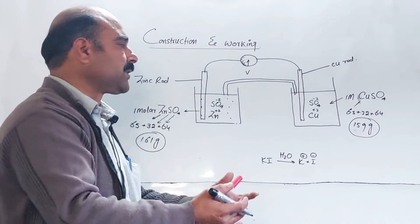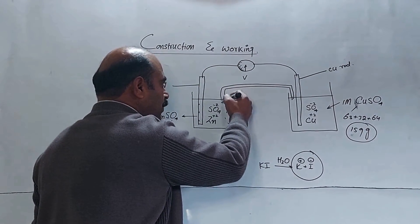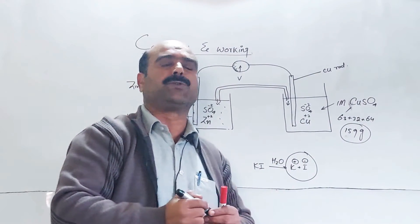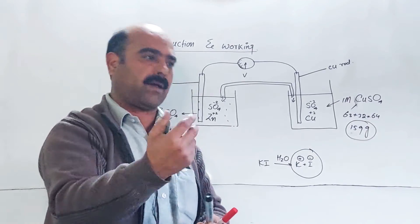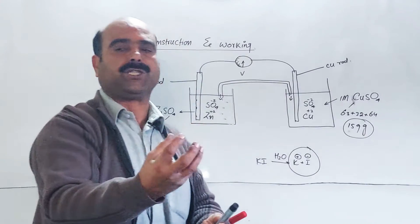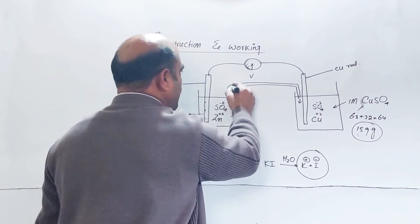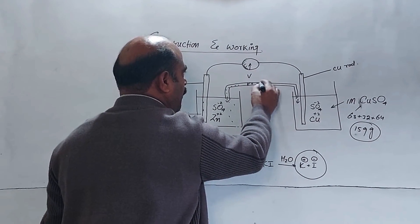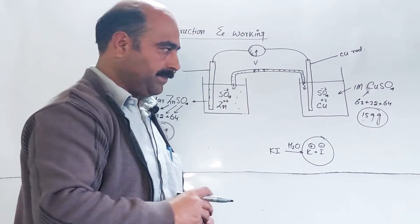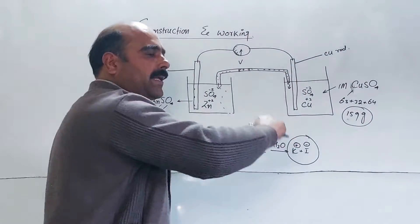The salt bridge is filled with a gelatinous material called agar, which is a sticky material. The salt — for example, potassium iodide — is dissolved in the agar, so the salt bridge contains potassium ions (K⁺) and iodide ions (I⁻). This salt bridge performs specific functions.